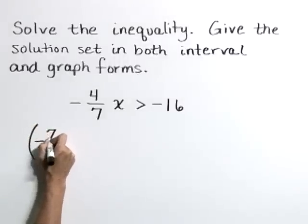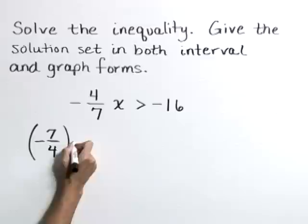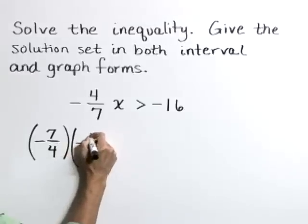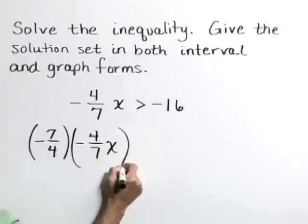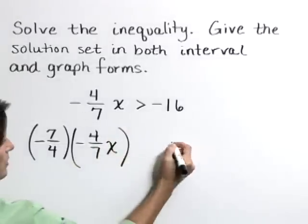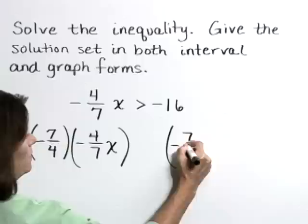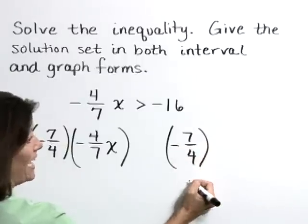So negative 7 fourths times the left hand side. And we'll do negative 7 fourths times the right hand side as well.